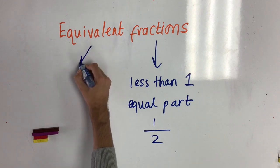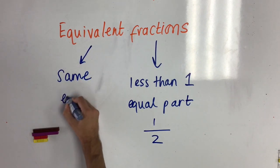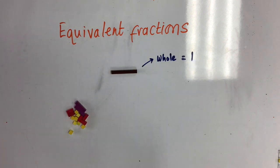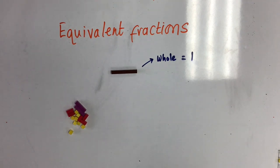The word equivalent means the same or equal. So when we're looking for equivalent fractions, we're looking for different fractions that equal the same amount. These rods are really good for helping us look at equivalent fractions. We're going to use this brown rod as our whole, so that means the brown rod equals one.